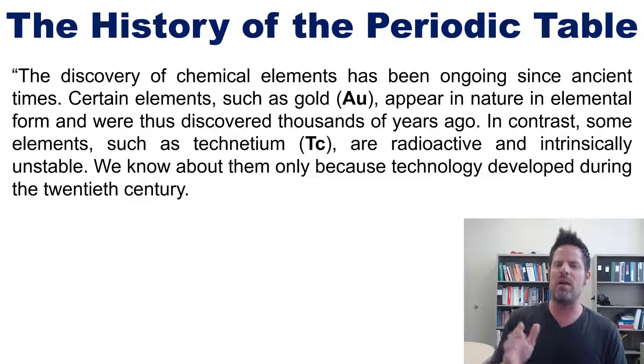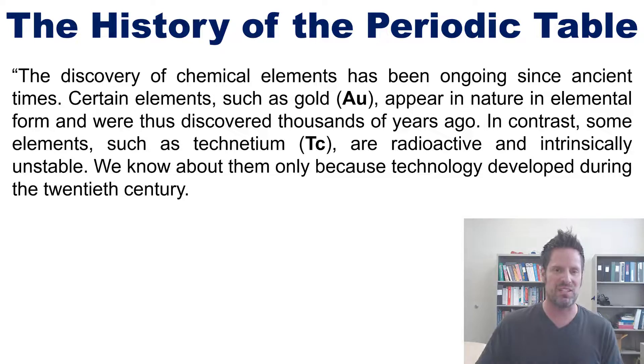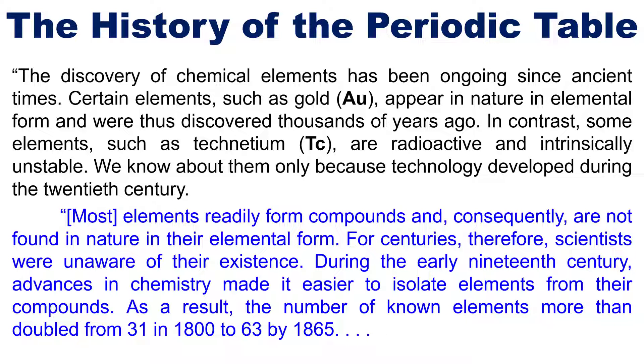Most elements readily form compounds and consequently are not found in nature in their elemental form. For centuries, scientists were unaware of their existence. During the early 19th century, advances in chemistry made it easier to isolate elements from their compounds. As a result, the number of known elements more than doubled from 31 in 1800 to 63 by 1865.